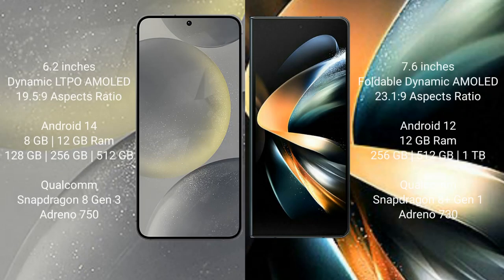Samsung S24 comes with a 6.2-inch dynamic LTPO AMOLED display with an aspect ratio of 19.5:9. Samsung Galaxy Z Fold 4 comes with a 7.6-inch foldable dynamic AMOLED display with an aspect ratio of 19.5:9.